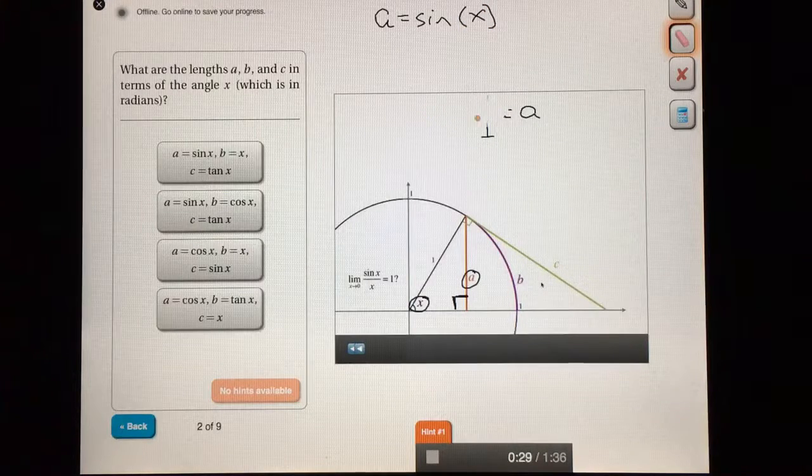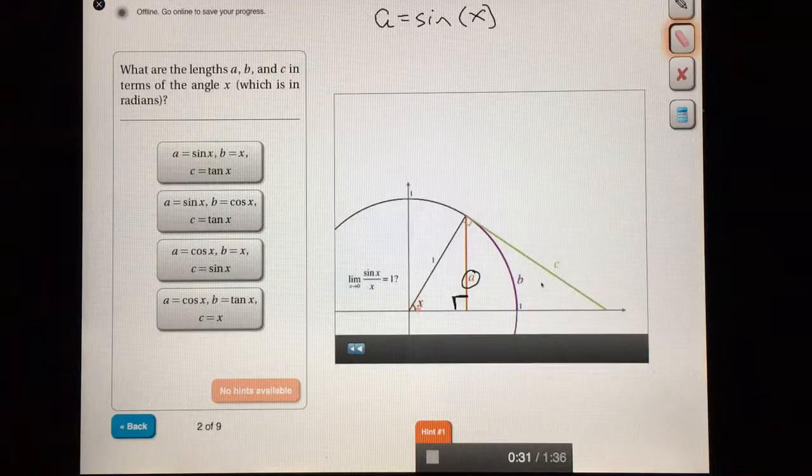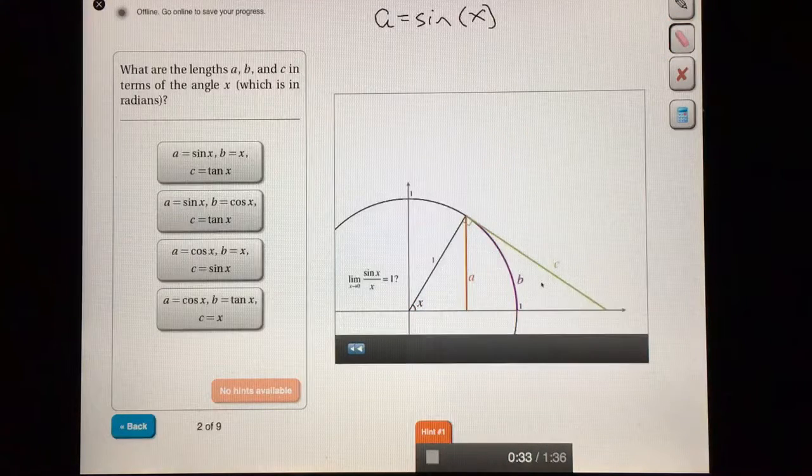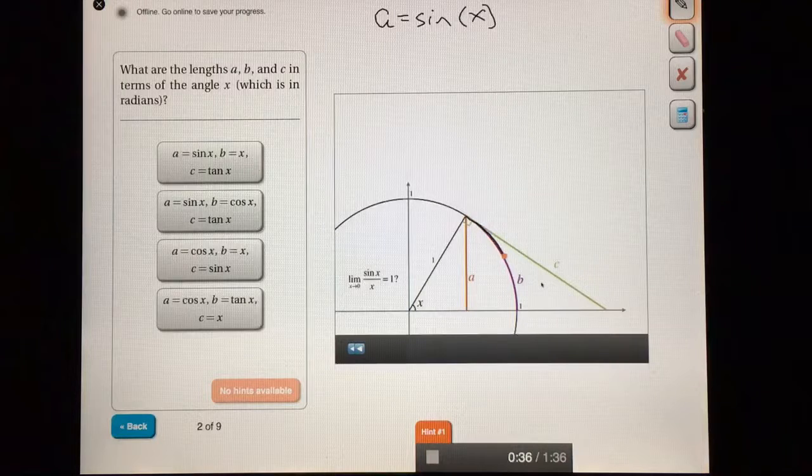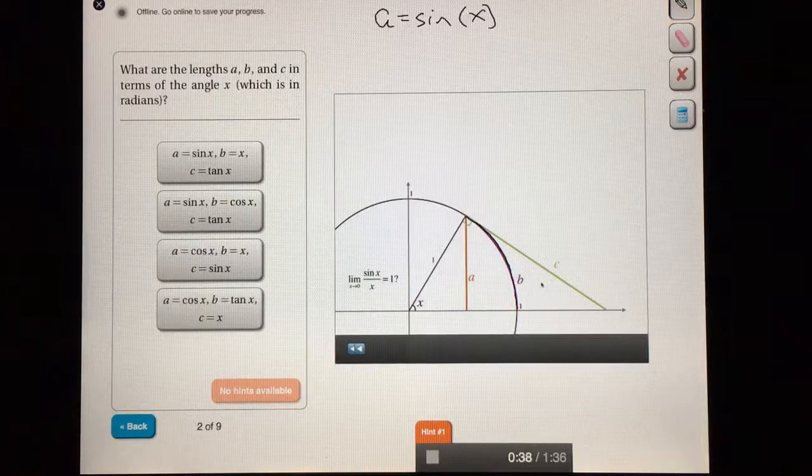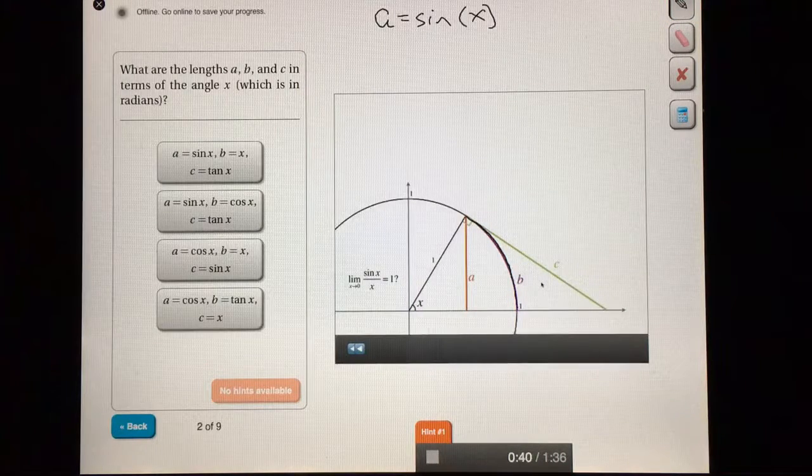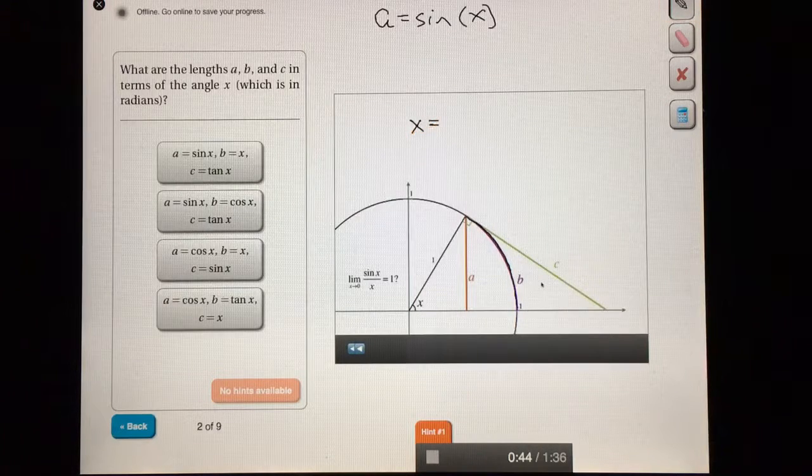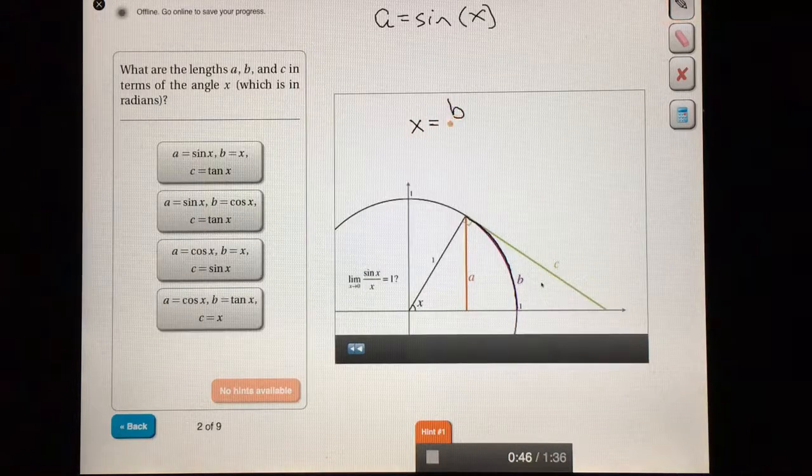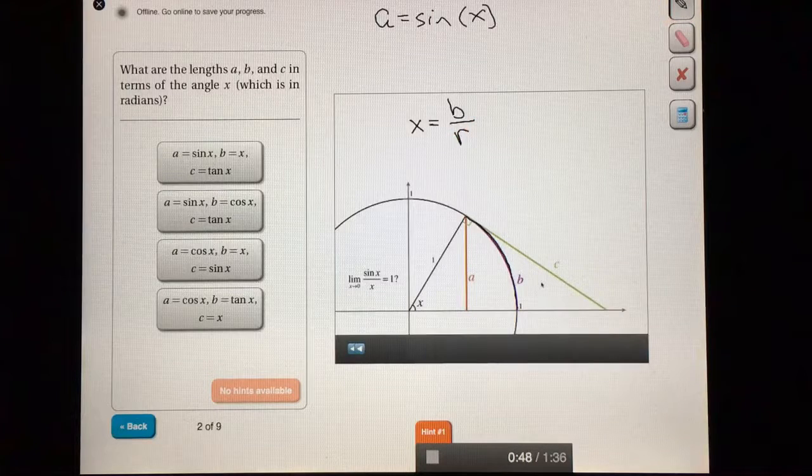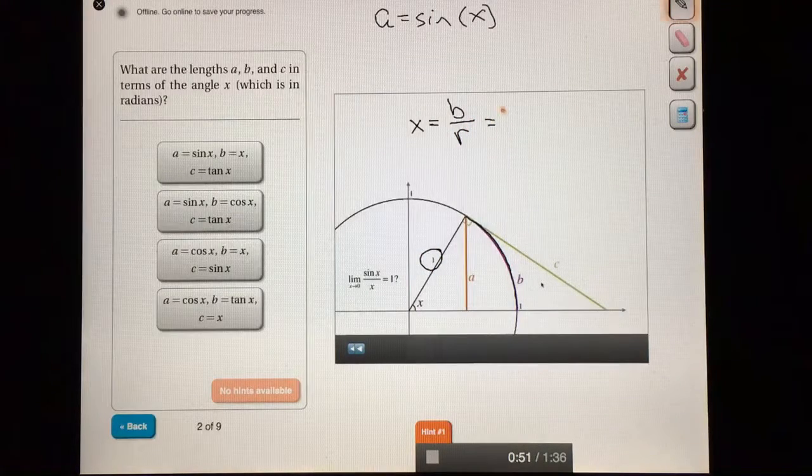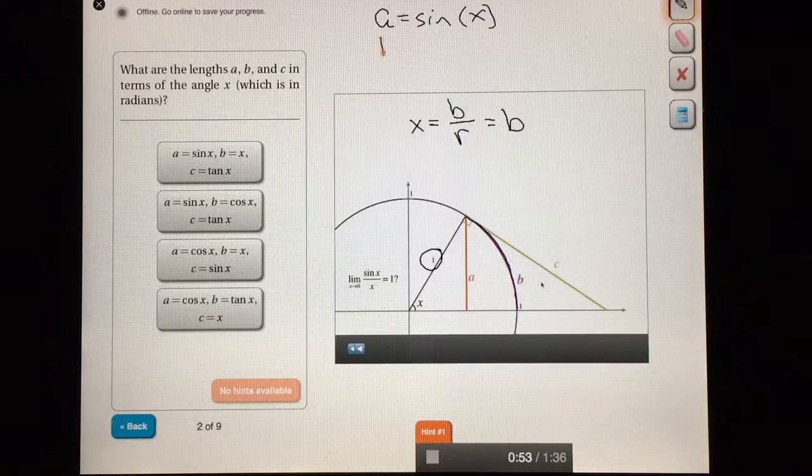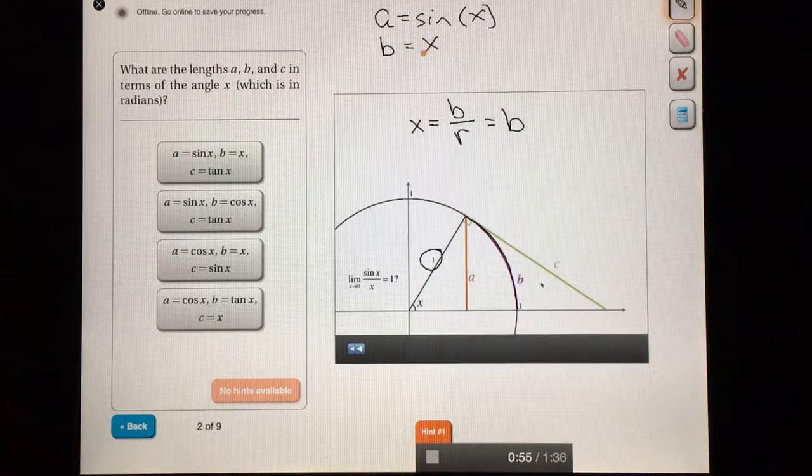Next, we can take a look at b. b is the arc of a circle. So how do we find the length of the arc of a circle? Well, we know that if we measure things in radians, an angle, say x, is just equal to the arc length, b, divided by the radius. But the radius here is 1, so this is just b. So b is just equal to x.